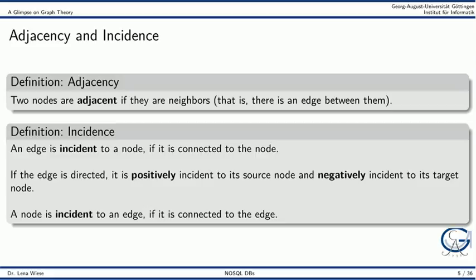An edge is incident to a node if it is actually connected to the node. For directed edges, we have to differentiate between positive incidence and negative incidence. A directed edge is positively incident to its source node and negatively incident to its target node. We also say that a node is incident to an edge if it is connected to the edge.